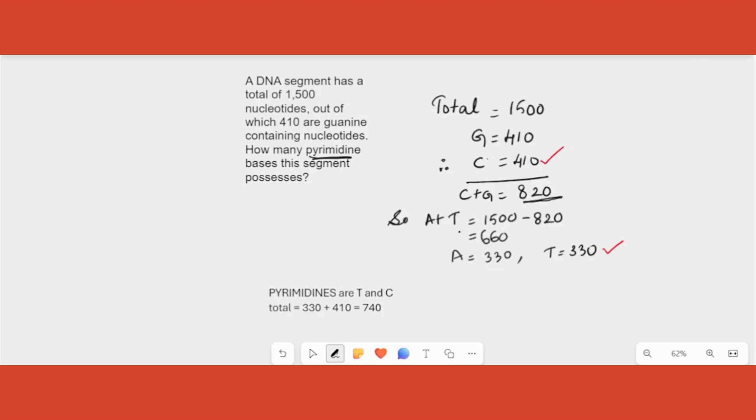Now we need to find out A and T as well. A and T will be other than 820, whatever is left over is all A plus T or A and T together. So we need to minus from 1500 which is the total number. We need to minus the total of C plus G. Total of C plus G we subtracted and we got 680. What is 680 now? That is total number of adenine and thymine. We know adenine number and thymine number are equal. That is A will be half of this and T also will be half of this - 340 and 340. So you got these.